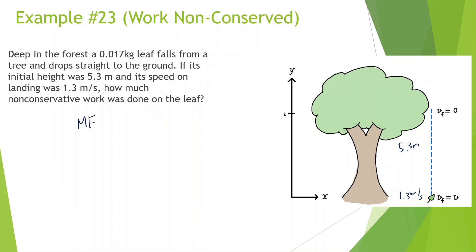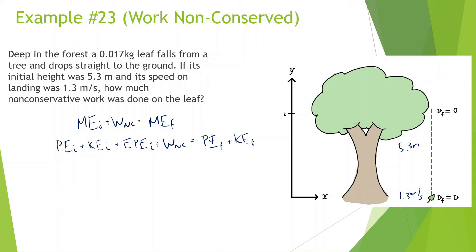Same setup: mechanical energy initial plus work non-conservative equals mechanical energy final. PE initial plus KE initial plus EPE initial plus work non-conservative equals PE final plus KE final plus EPE final. I know this is tedious, but writing it all out step by step reduces mistakes. At the beginning, there is potential energy — it's 5.3 meters high. There's no initial velocity since it just drops, no spring energy. There is work — that's what we're looking for — the work done by air resistance.